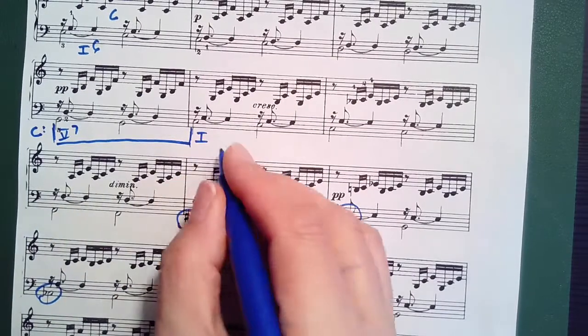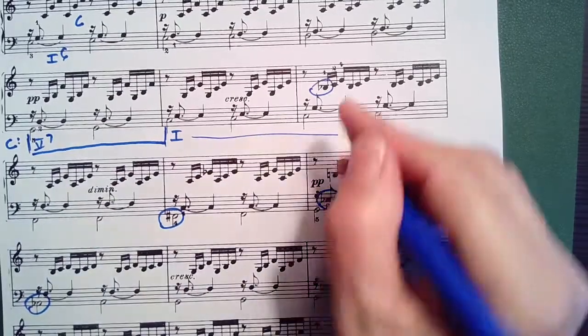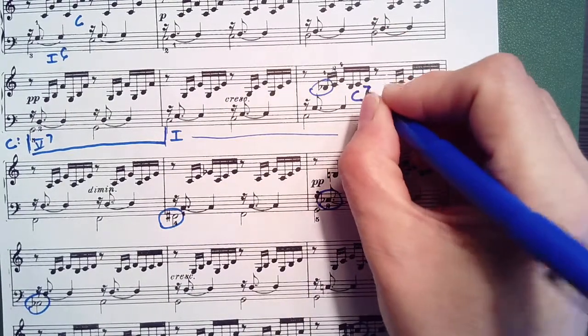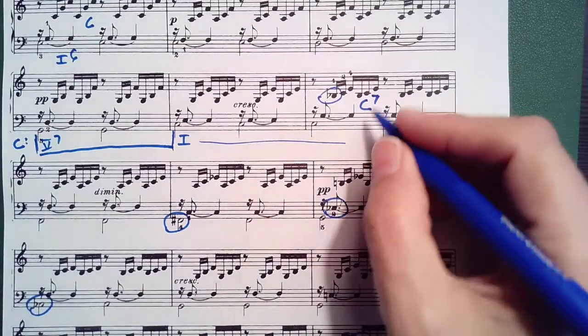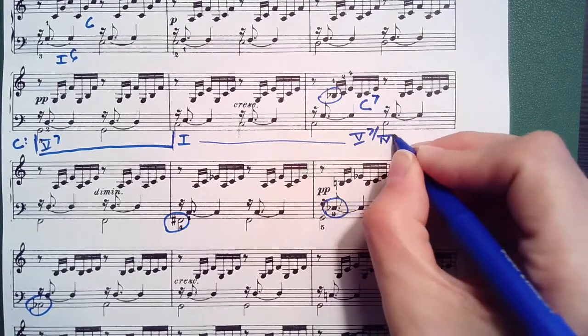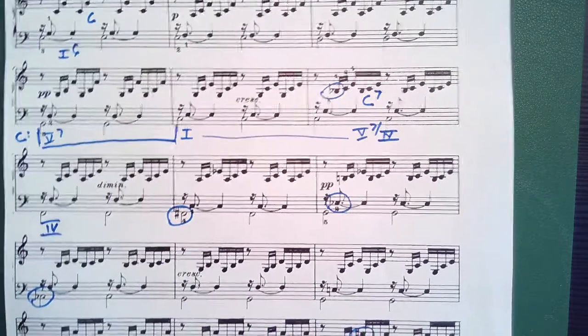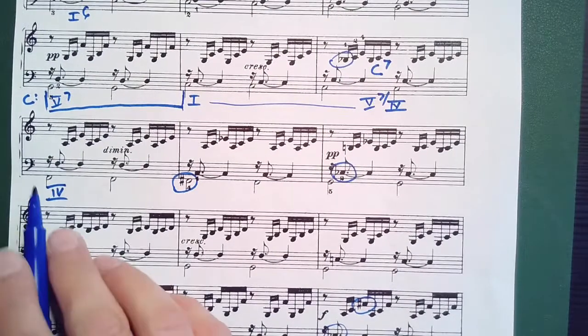Now here we've got our one chord. Simply by throwing a B flat on top of that one chord, it changes C major into C7. And C7 is five seven of four, which then goes to a four chord. This four chord very frequently will go to five.